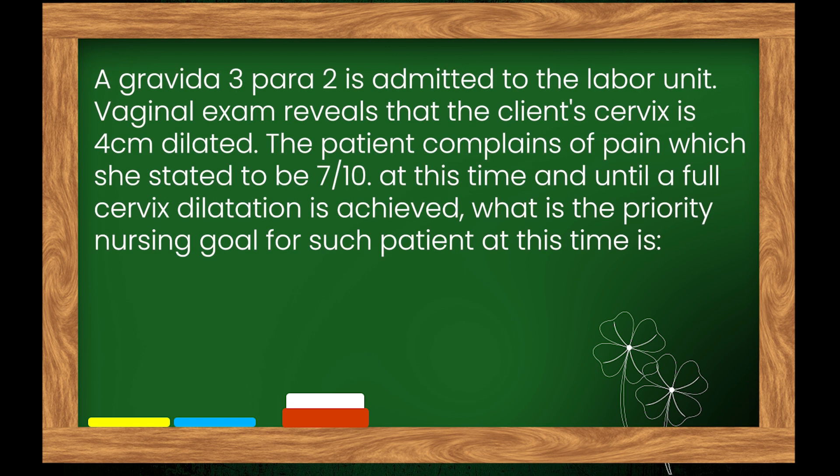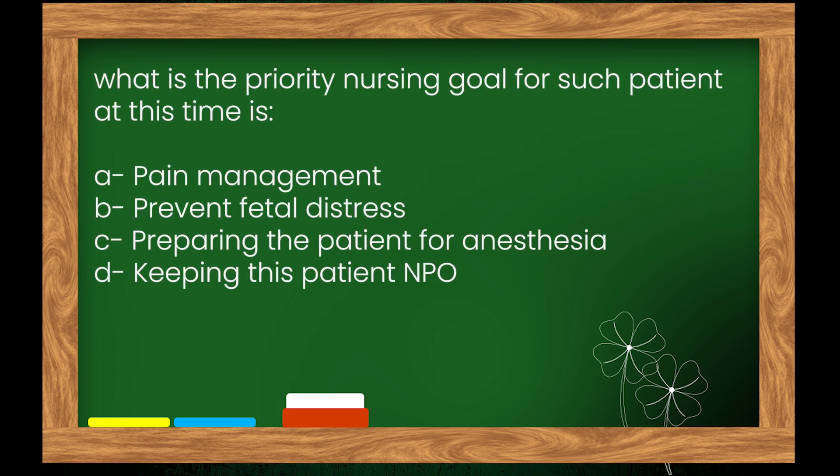Question 17: A gravida 3 para 2 is admitted to the labor unit. Vaginal exam reveals the cervix is 4 cm dilated. The patient complains of pain rated 7/10. At this time and until full cervical dilatation is achieved, what is the priority nursing goal? Options: A. Pain management, B. Prevent fetal distress, C. Preparing the patient for anesthesia, D. Keeping the patient NPO. The right answer is option A: Pain management.